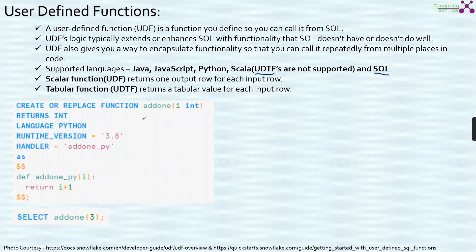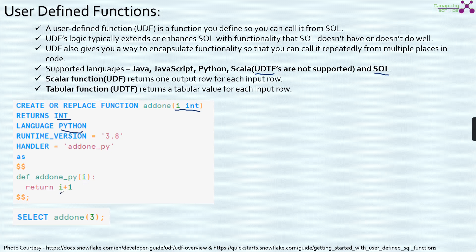This is a very simple function written in Python. It takes an integer as the input and returns an integer as the output. The language is Python and the runtime is 3.8. It takes i as input, adds 1 to i, and returns it. So when you call a function like select add_1(3), it will return the output of 4. This is a scalar function which takes one input and returns one output.